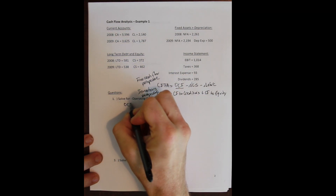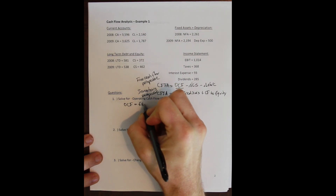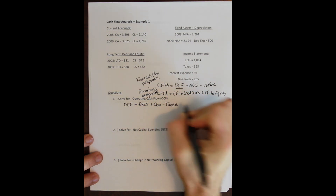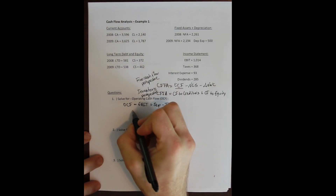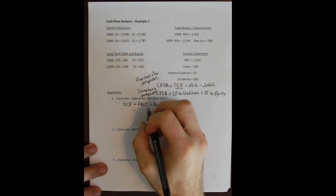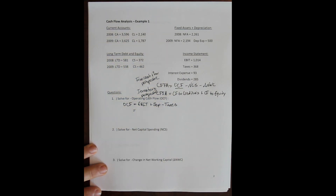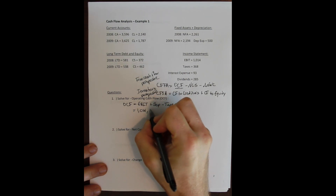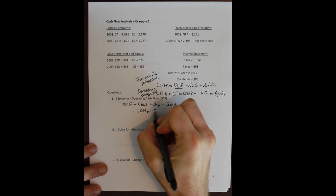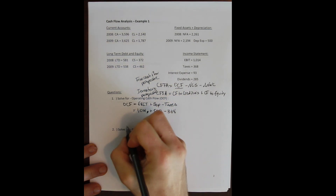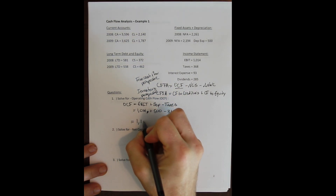Operating cash flow equals EBIT plus depreciation minus taxes. All three come from the income statement. EBIT is given at 1,014, depreciation expense is 500, and we subtract tax expense of 368, giving us operating cash flow of 1,146.